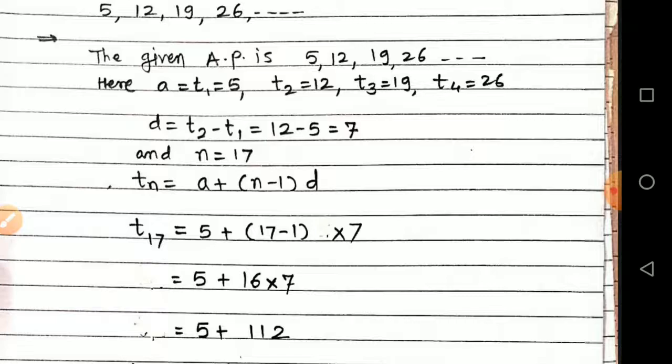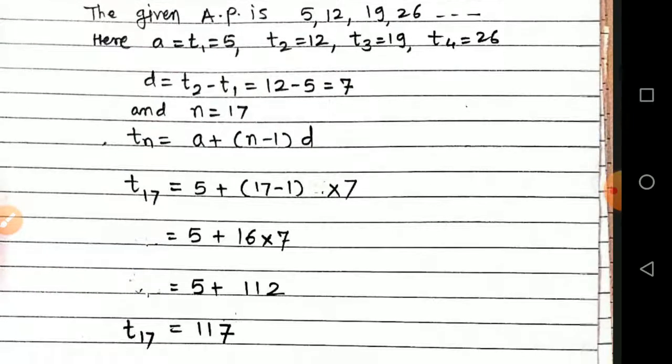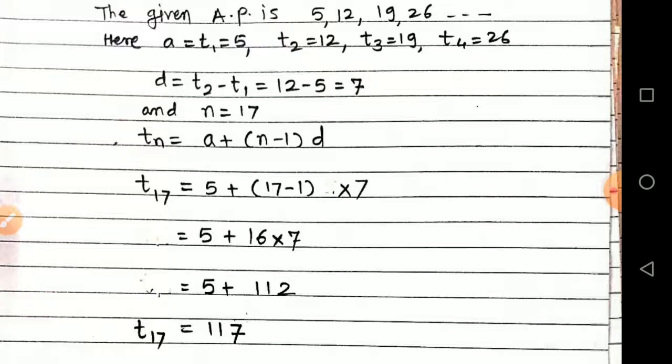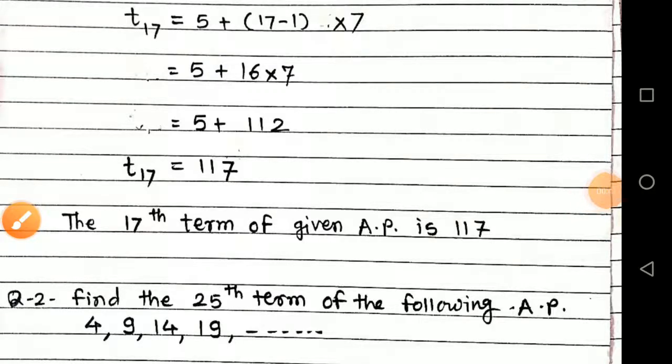means 16 into 7. To the next step, 5 plus 112. T17 is equal to 117.